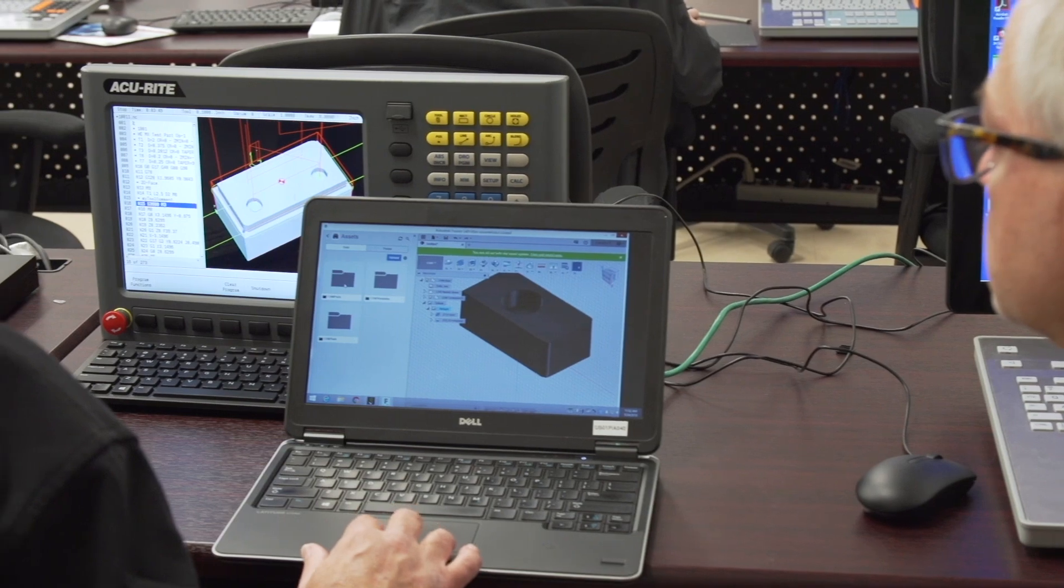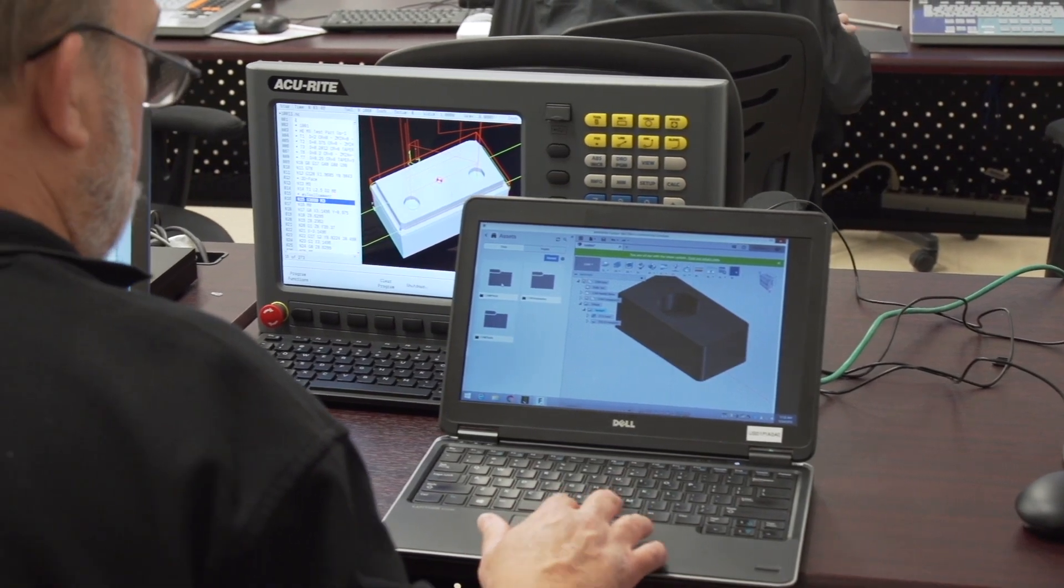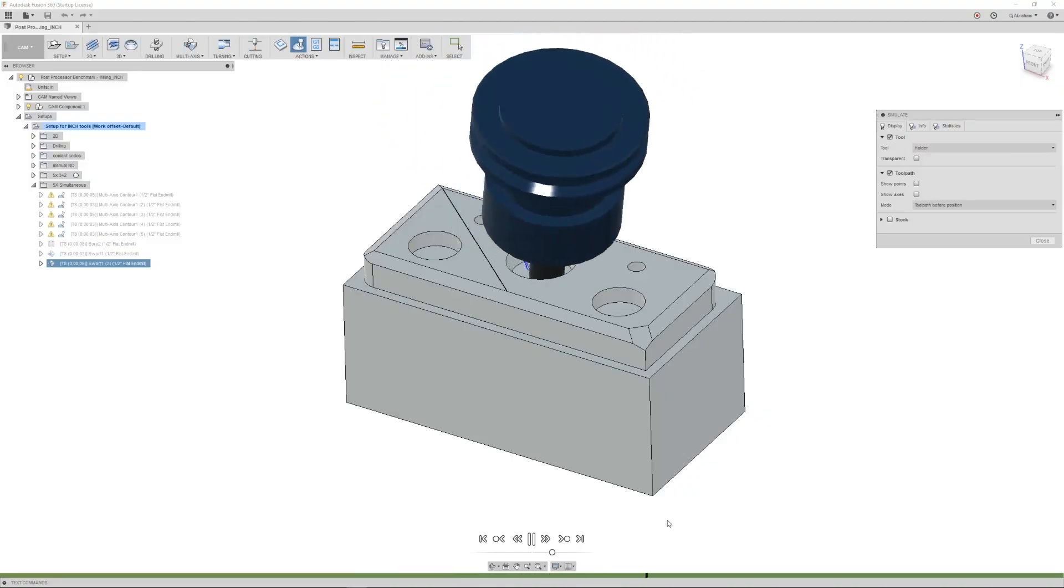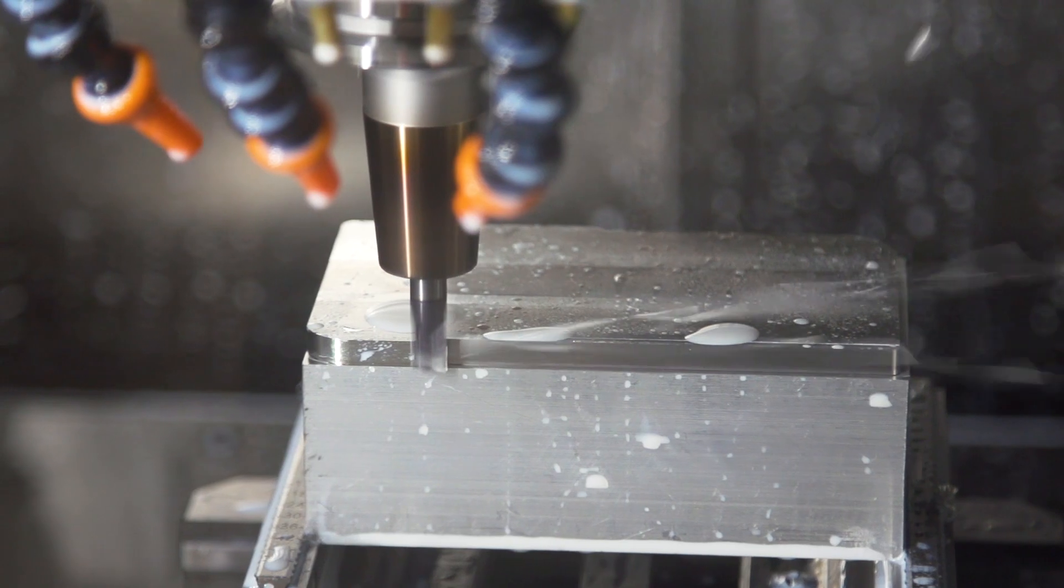The process starts with validating the basic motion a machine can execute by using our post processor benchmark part. This helps us ensure the foundation is solid.